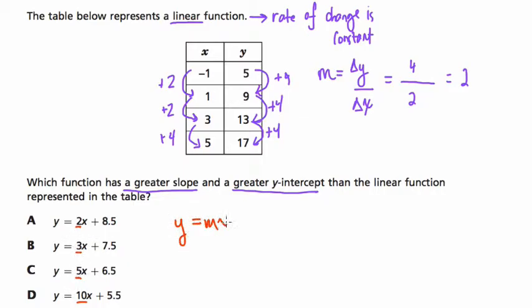So a greater slope. So our slope here is 2. So we could plug in values and make tables for each of them, or we could recognize that the coefficient, the number next to x, represents the slope when you have an equation written in y equals mx plus b format. m is the slope, b is the intercept.